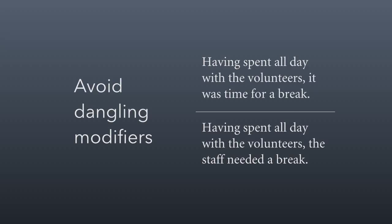Avoid dangling modifiers. A modifier is dangling when the thing it modifies is not actually in the sentence. For example: 'Having spent all day with the volunteers, it was time for a break.' 'Having spent' is modifying something not in the sentence — we don't know who spent all day with the volunteers. We fix it by inserting the subject: 'Having spent all day with the volunteers, the staff needed a break.' The staff are the ones who spent all day, so that was the missing element.